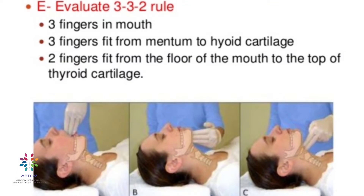Next, E — Evaluate the 3-3-2 Rule. The first three refers to mouth opening: ideally the patient's mouth should be at least three fingers wide when open, approximately 5 centimeters. A mouth opening less than three fingers may indicate a difficult airway. The second three refers to the length of the mandible, measured from the tip of the chin to the hyoid bone. A smaller mandible indicates more difficult airway management.